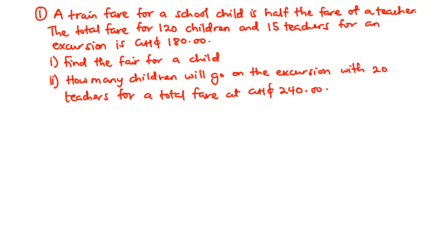In this video we are going to solve questions on word problems involving simultaneous equations as we prepare for the upcoming NOVDECK core mathematics paper. This is question 7b of NOVDECK 2013: a trained fare for a school child is half the fare of a teacher. The total fare for 120 children and 15 teachers for an excursion is 180 Ghana cedis. Find (i) the fare for a child, and (ii) how many children will go on the excursion with 20 teachers for a total fare of 240 Ghana cedis.